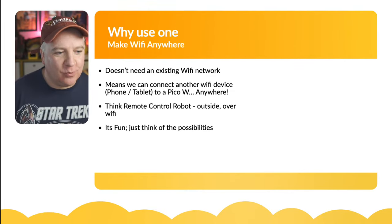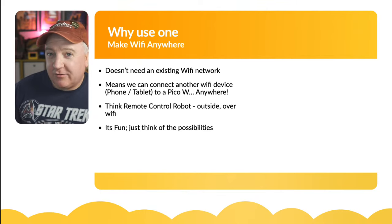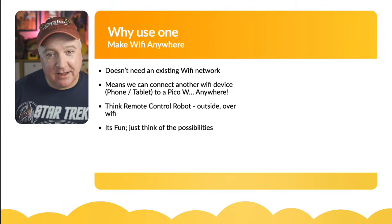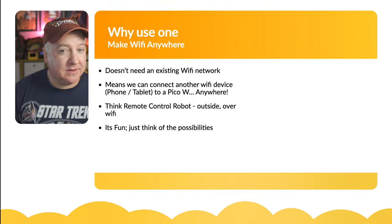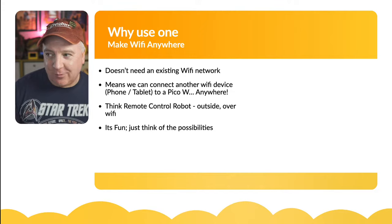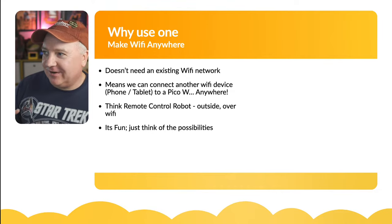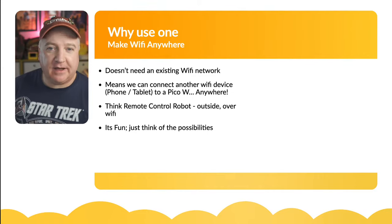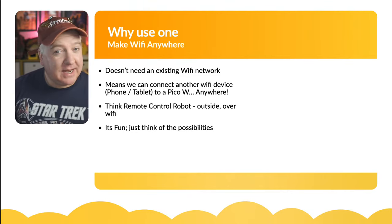Why would you want to use this? Normally, if you've got a robot and you're connecting to your Raspberry Pi Pico W or another MicroPython device like an ESP32 over Wi-Fi, you need an existing Wi-Fi infrastructure. That thing looks for your SSID, provides the password, and connects to an already-established network. That's fine at home or in the office, but if you're in the middle of nowhere — say you're in the woods, at a trade show, or somewhere without your home network — how do you connect to your Wi-Fi device? You need an access point.